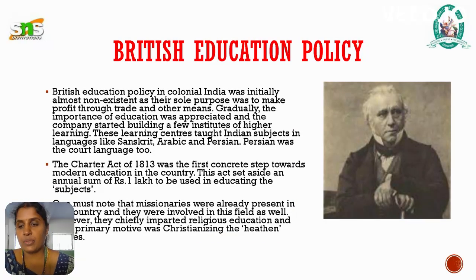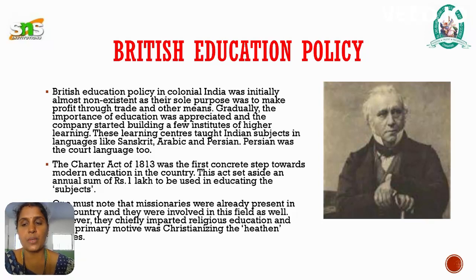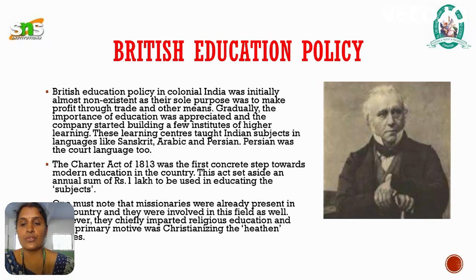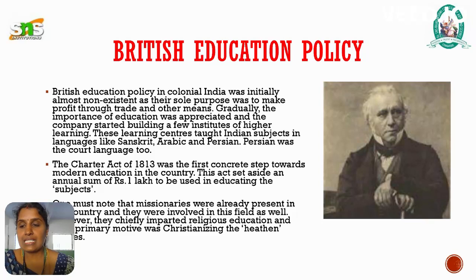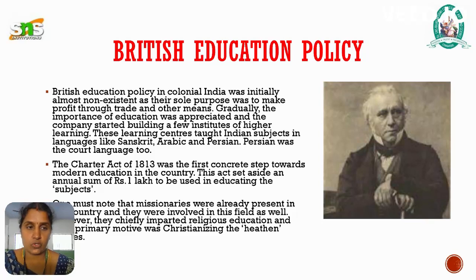British education policy in colonial India was initially almost non-existent, as their sole purpose was to make profit through trade only. Later, the importance of education was gradually appreciated and the company started building a few institutes of higher learning. These learning centres taught Indian subjects in languages like Sanskrit, Arabic, and Persian. Persian was also used as a code language in the 18th century.